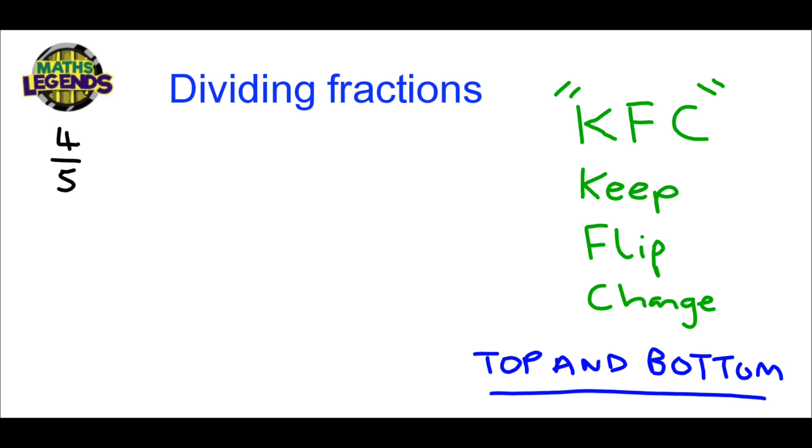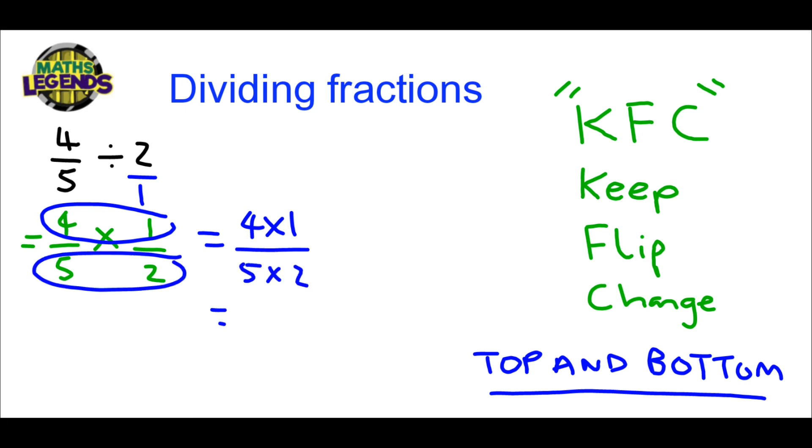4 over 5, divided by 2. Now 2 can be written as 2 over 1. So we use our rules, KFC. So first fraction stays as it is, we keep it. The second fraction we flip. And the sign we change. We then use our multiplying fractions rule, top and bottom. So we get 4 times 1, over the bottom, which is 5 times 2. This then can be simplified by dividing top and bottom by 2. So we're left with 2 over 5.